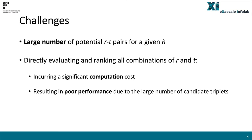However, such an instance completion problem on knowledge graphs is a challenging task due to a large number of potential relation-tail pairs for a given head. Directly evaluating and ranking all combinations of relations and tails not only incurs a significant computation cost, but also results in poor performance due to the large number of candidate triplets.